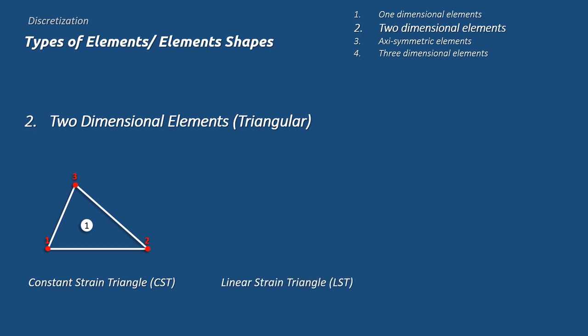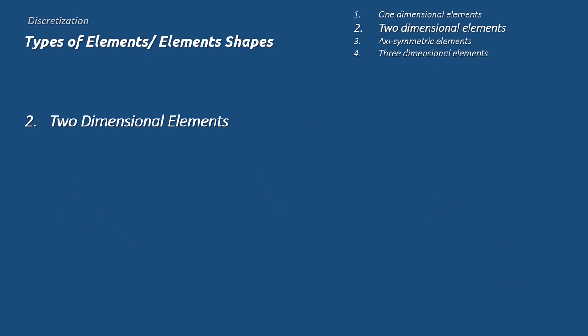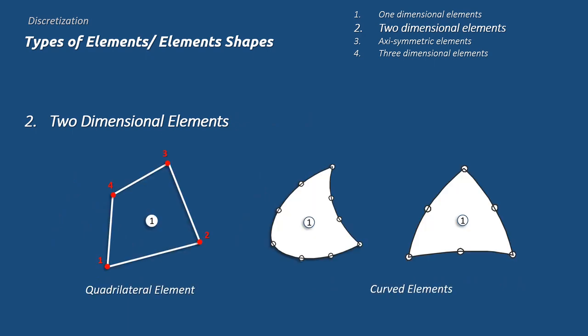Linear strain triangle are those which have six nodes. Quadratic strain triangle has 10 nodes in a single element, 9 nodes at the exterior and 1 node at the interior. The other type of two-dimensional elements are quadrilateral element and curved elements, which are used depending on the shape of the member.